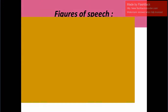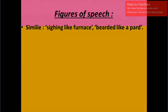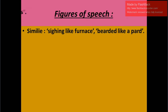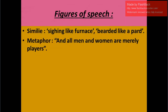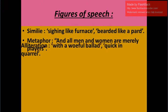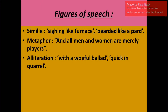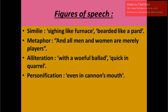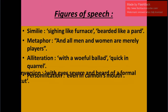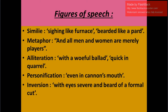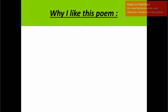Let us talk about the figures of speech. First, simile: 'sighing like a furnace' and 'bearded like a pard.' Then metaphor — metaphor is implied simile: 'All the men and women are merely players.' Then alliteration: 'with a woeful ballad' — the W sound is repeated; and 'quick in quarrel' — the Q sound is repeated. Personification: 'even in the cannon's mouth' — the cannon is given the human quality of having a mouth. And inversion: for poetic effect, the sequence of words is changed, as in 'with eyes severe and beard of formal cut.'